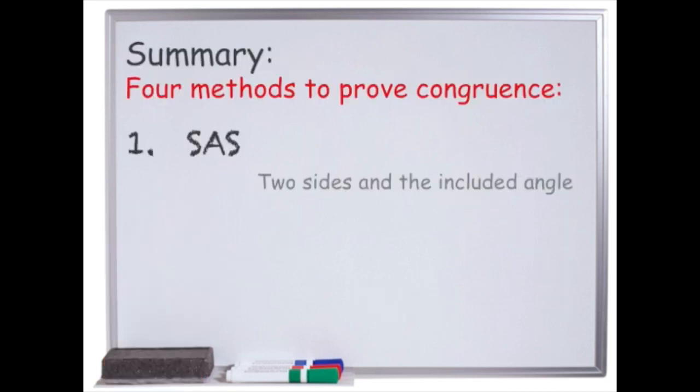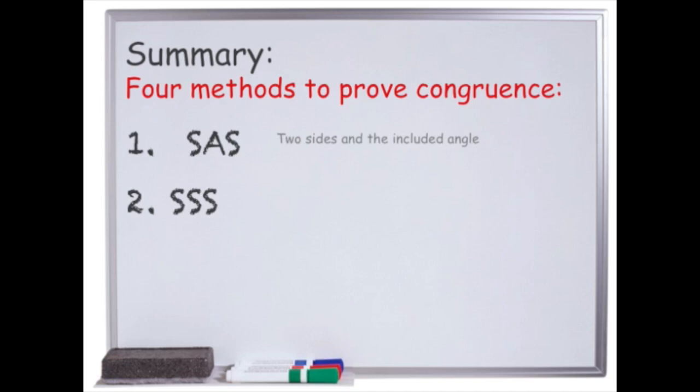So that is how we tell two triangles are congruent. Here is a quick summary. You have side angle side, SAS, where there are two sides and the included angle are the same. There is SSS or side side side, where all three sides are the same in both triangles.